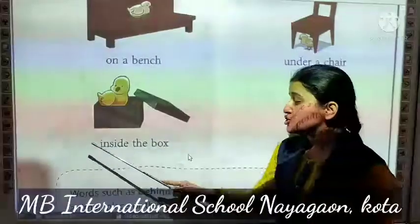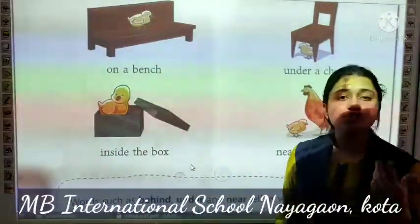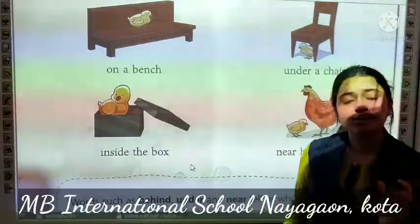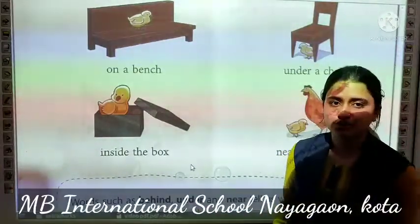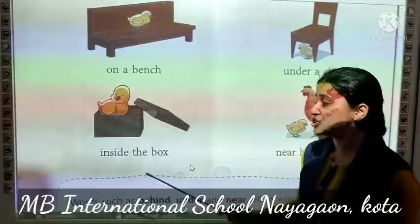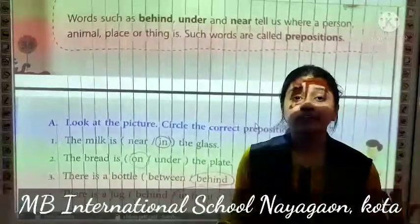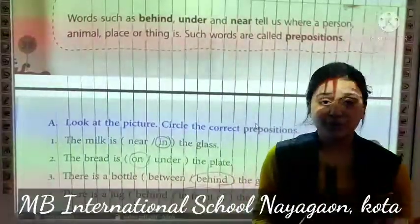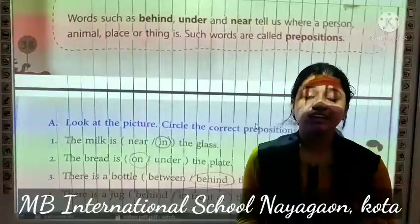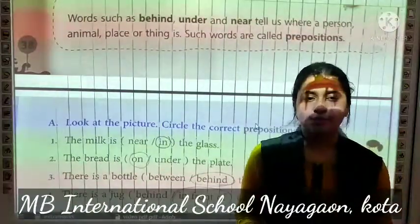Next, a chik is inside the box. Ab joh chik hai, yaha pere prepositions word kya hai? Inside. Inside means under. Aur aap yaha pere 'in' bhi use kar sakti ho, woh bhi correct hai. Toh yaha pere prepositions word hai inside, ki joh chik hai woh box ke under hai. Now, what did we get? Ki joh prepositions hota hai, woh noun ya pronoun ki time, destination or place ko describe kerta hai.